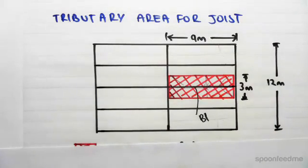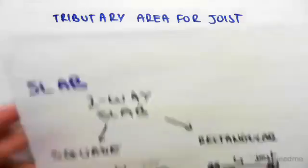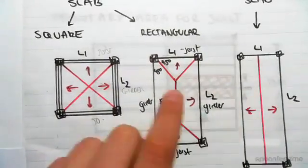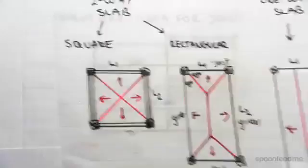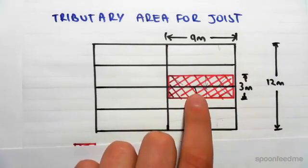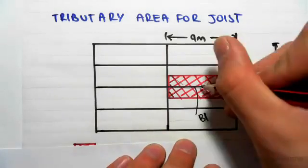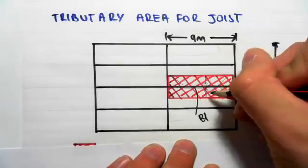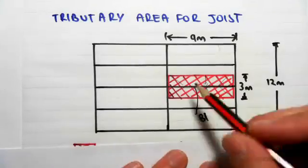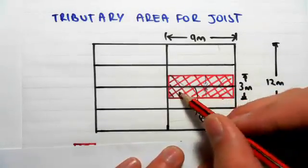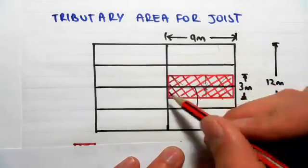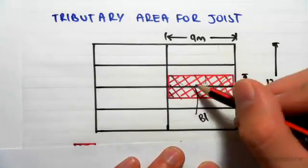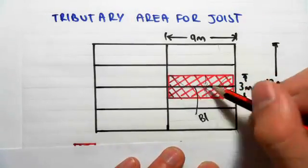We talked about in the previous video this idea of a one-way slab and two-way slabs. So we need to establish whether this slab is going to behave as a one-way, which is a lot simpler, or whether it's going to divide so that some of the slab load will go to this girder and that girder in triangular load paths.